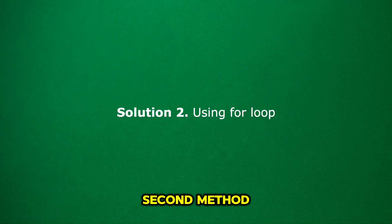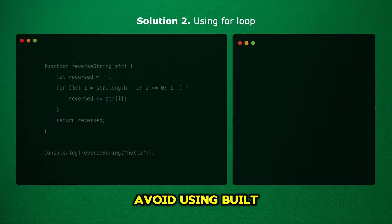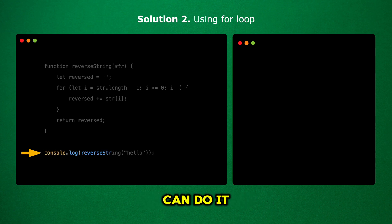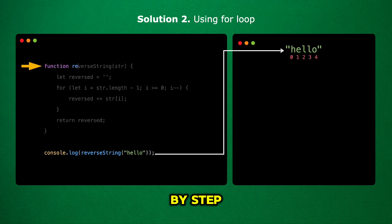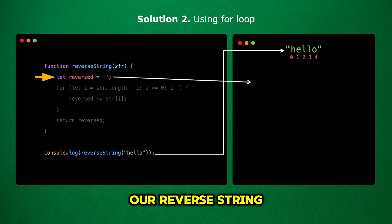Now let's move on to the second method, which involves using a for loop. This approach is great if you want to avoid using built-in methods, or if you just prefer using loops. This function takes a string as input and returns the reversed version of that string. We're creating a new variable called 'reversed' and setting it to an empty string. We'll use this variable to build our reversed string one character at a time.